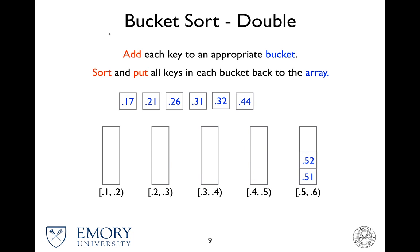For the fifth one, it's already sorted. So we just simply put it back. And again, once the bucket is emptied, we have a list with all the keys in ascending order.